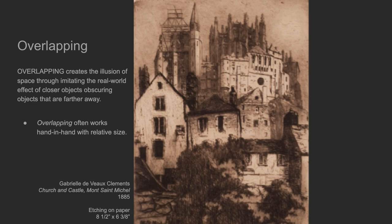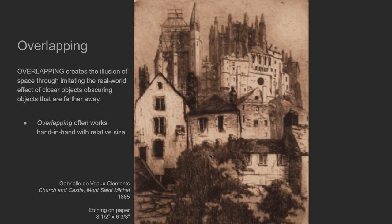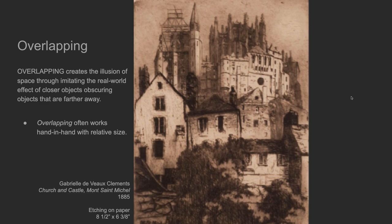What objects are closest to us in this image? I would say this tree, because it is in front of these houses or structures. What object is farthest away? It's these towers or this building here. We can't depend on relative size in this instance because these are all dissimilar objects. We know this is farther away because it's behind this, and this is farther away than these, which are farther away than this tree. That is overlapping.